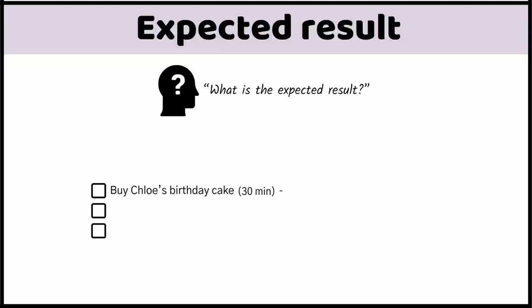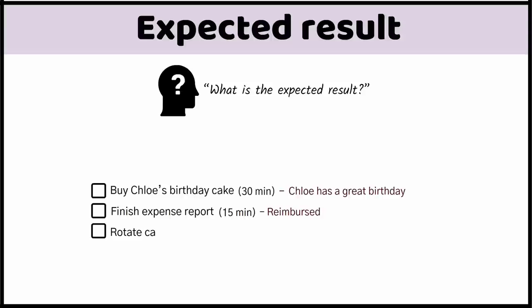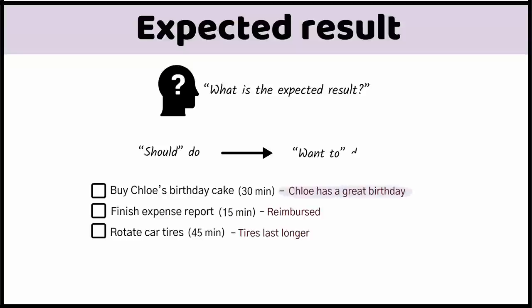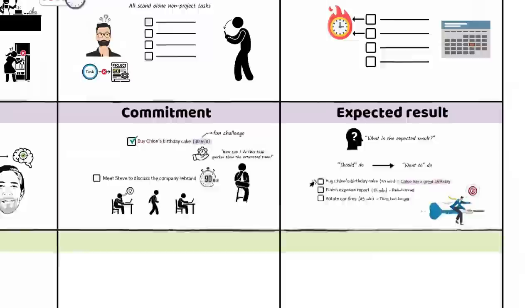The last thing you need to add when writing a task in your master to-do list system is the expected result. For example: 'buy Chloe's birthday cake [30 minutes] — Chloe has a great birthday,' 'finish expense report [15 minutes] — reimbursed,' 'rotate car tires [45 minutes] — tires last longer.' When you add expected results to your tasks, your to-do list goes from things you should do to things you want to do. Ending tasks with expected results also allows you to easily select important tasks because you can quickly see which ones move you closer to your goals.